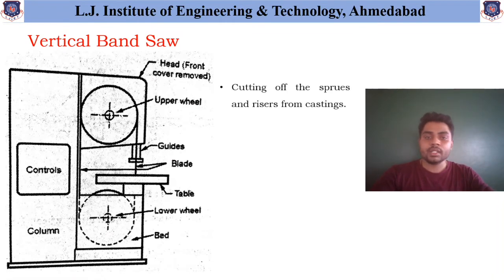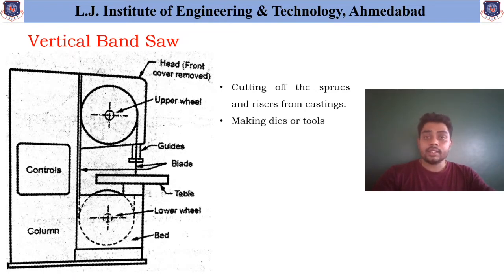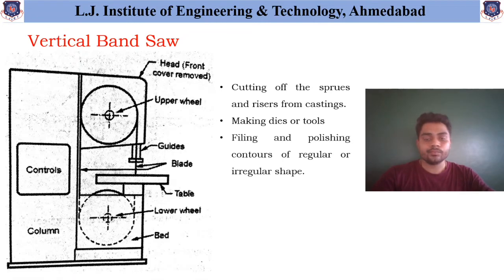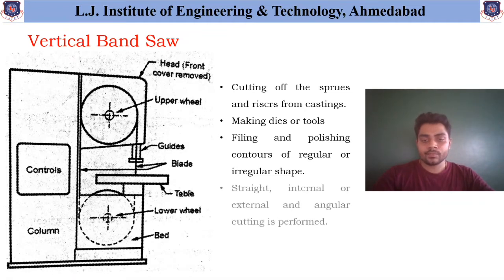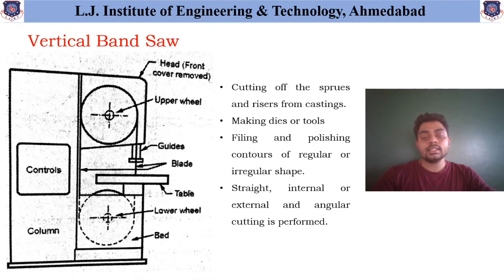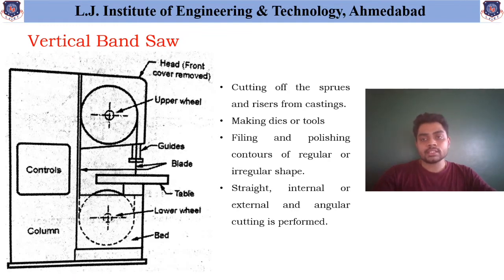This is the simple arrangement for the case of this vertical band saw. Some of the applications of the vertical band saw are: it is useful for cutting of the sprue and riser from castings; it is also useful for making dies or tools; and for filing and polishing the contours of regular or irregular shapes. Also, straight internal or external and angular cutting is performed with the help of this vertical band saw.